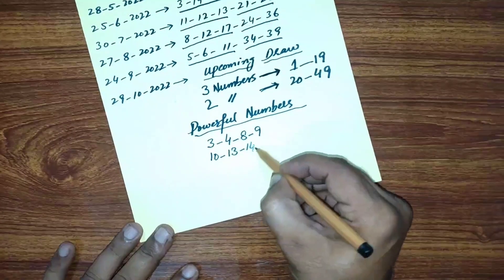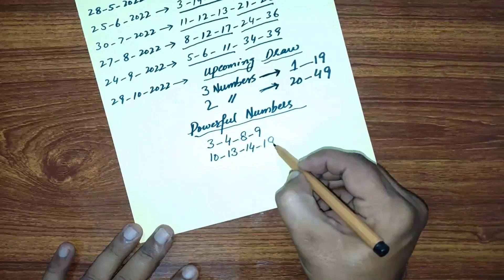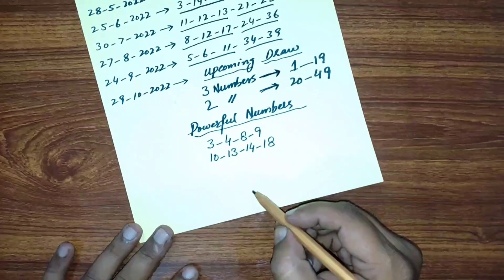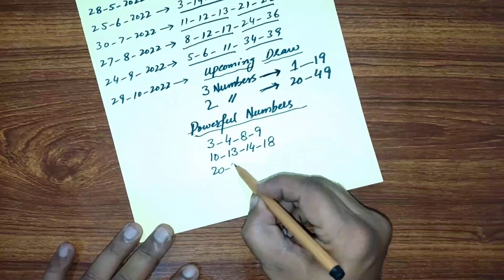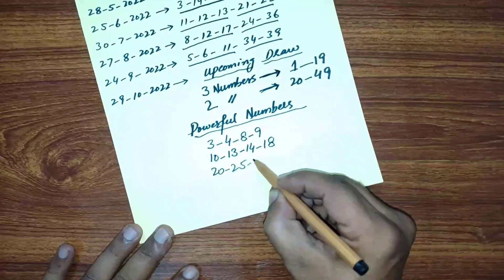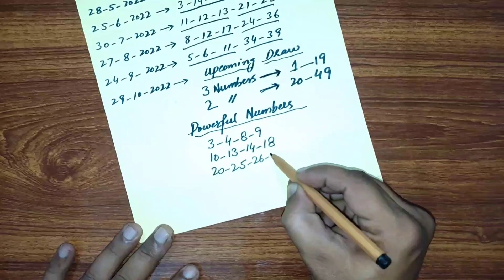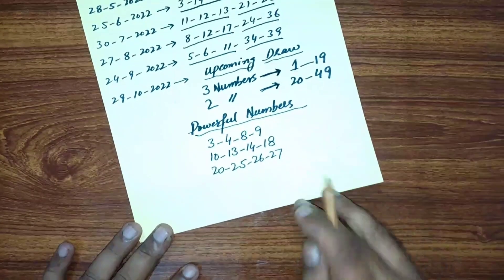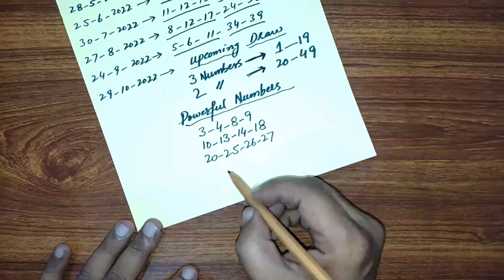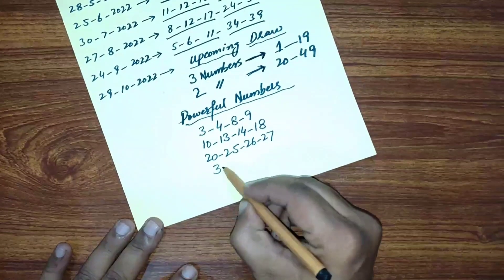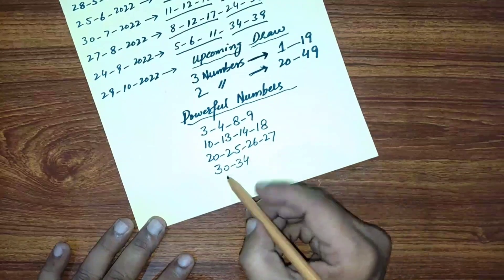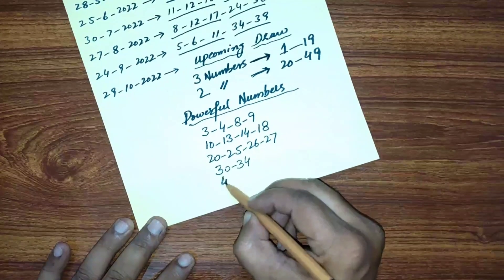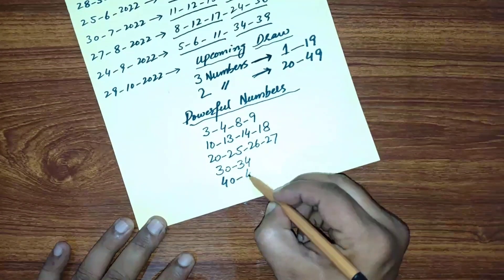From 20 to 29, I have four numbers: 20, 25, 26, and 27. From 30 to 39, I have two numbers only: 30 and 34. From 40 to 49, two numbers: 40 and 46.